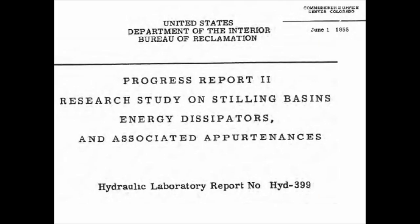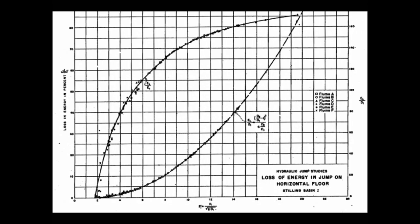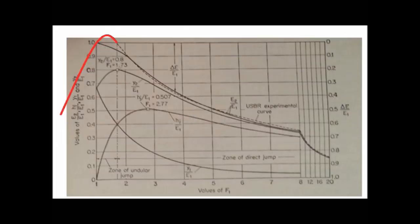has a picture which explains the hydraulic jump. There is the USBR experimental curve which shows that there are no losses below Froude number 1.73, square root 3. This experimental curve fits perfectly to the new equation.